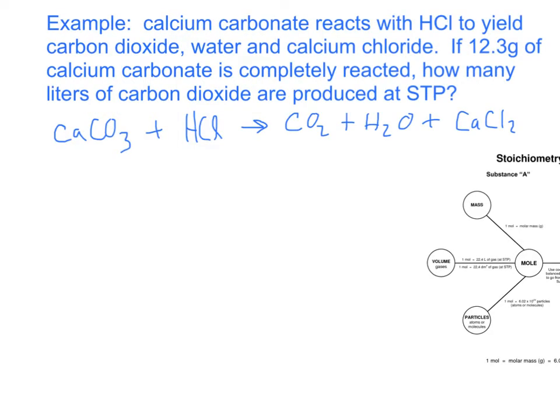Okay, so here's an example problem. We have calcium carbonate reacting with hydrochloric acid to give us carbon dioxide, water, and calcium chloride. And now here's the question we're posed: If 12.3 grams of calcium carbonate is completely reacted, how many liters of carbon dioxide gas are produced at STP?